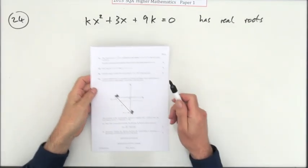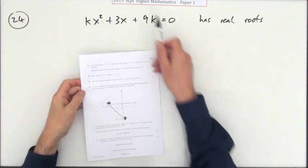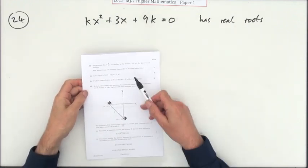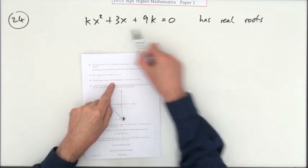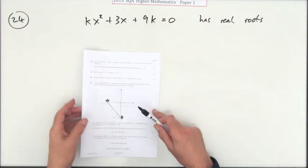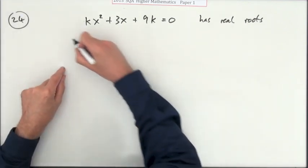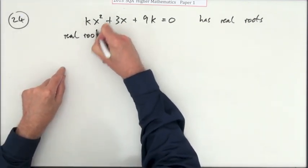So number 24, a former question in paper one of the SQA Higher 2015. Find the value of k such that this equation has real roots. Well, that's a discriminant then. Real roots means that b² - 4ac should be greater than or equal to zero.